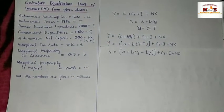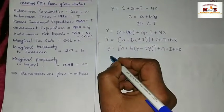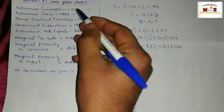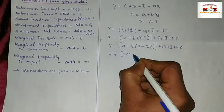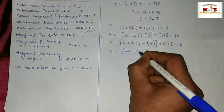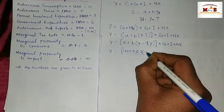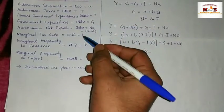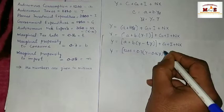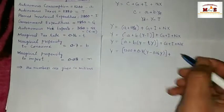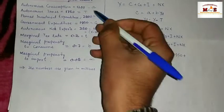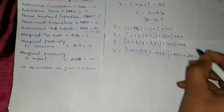Now we substitute all the numerical values. Y equals 1200 plus 0.7 times (Y minus 0.16Y) plus G (which equals 1950) plus I (which equals 2800) plus NX (which equals 350).